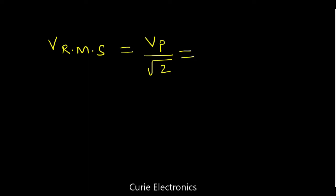So, Vp upon root 2, or we can say it is 0.707 times Vp, that is the Vrms.